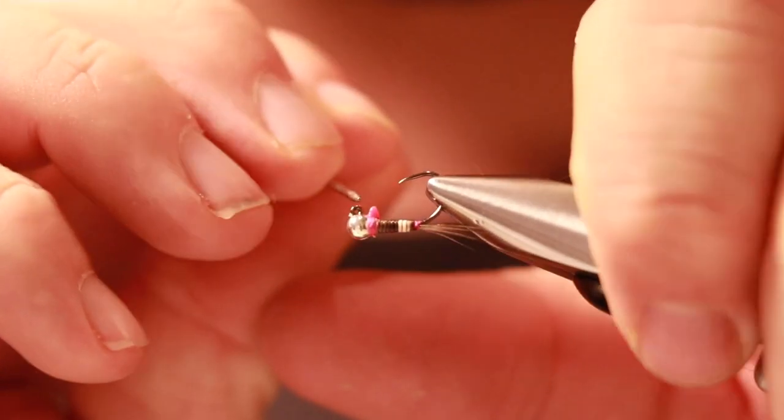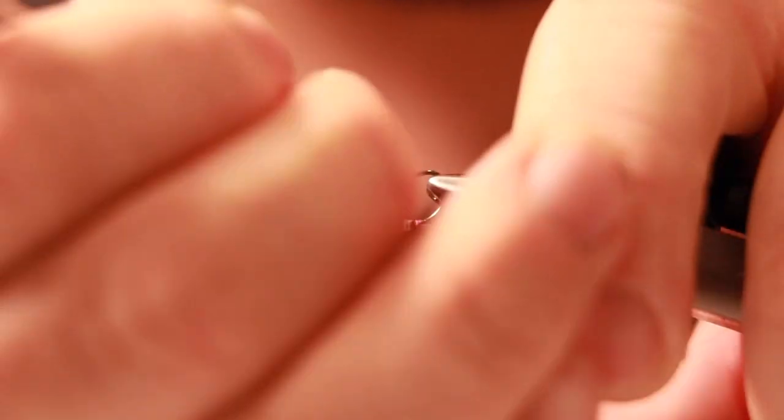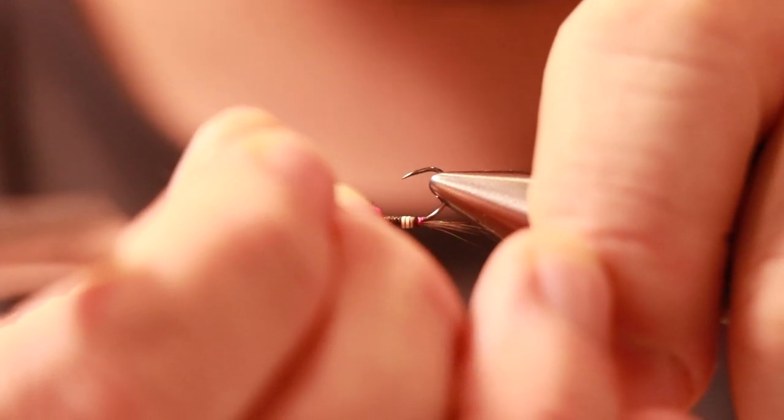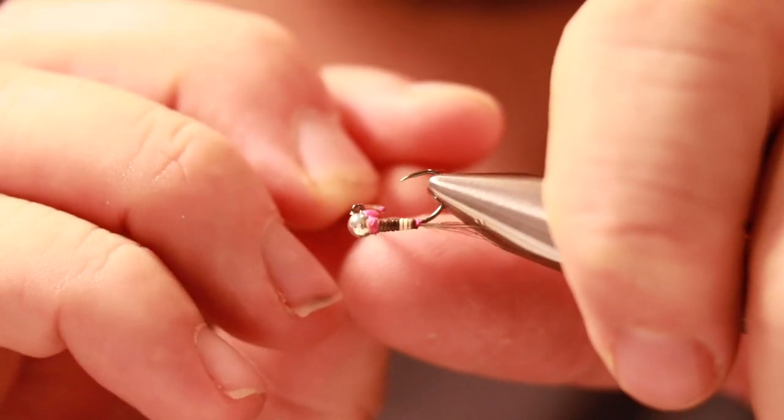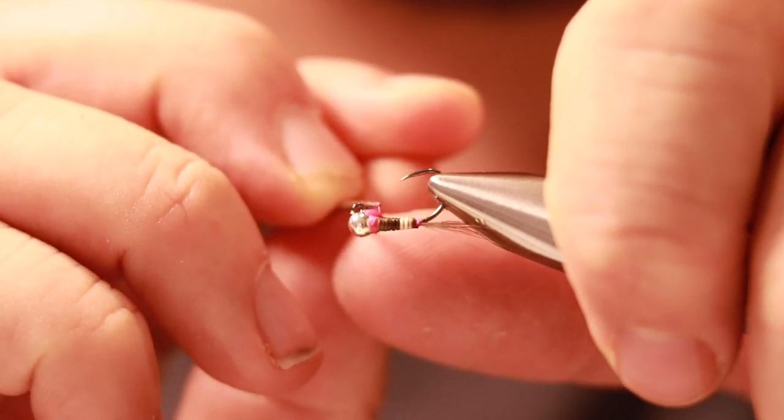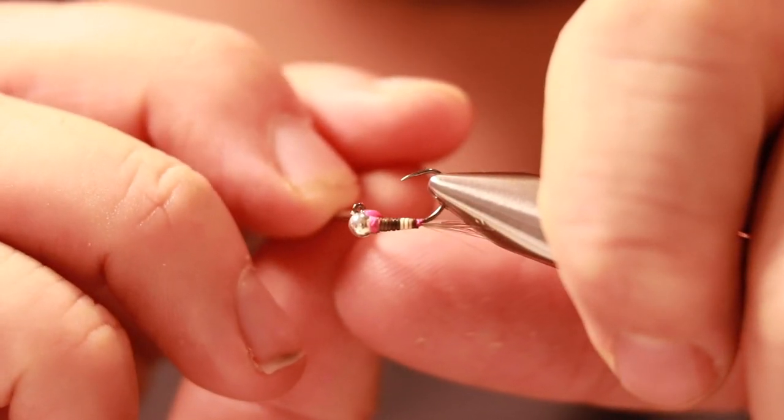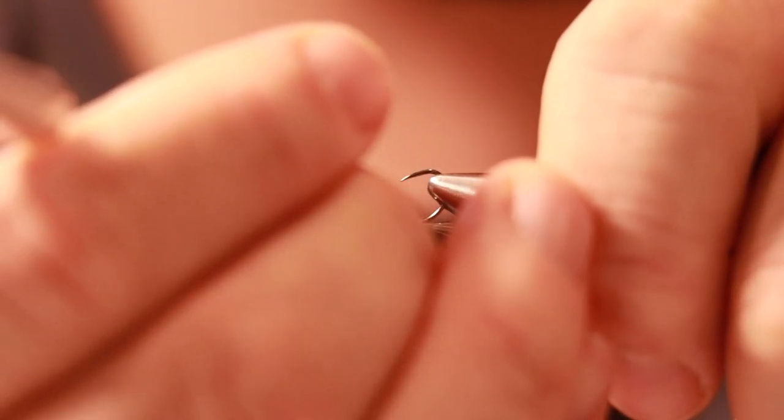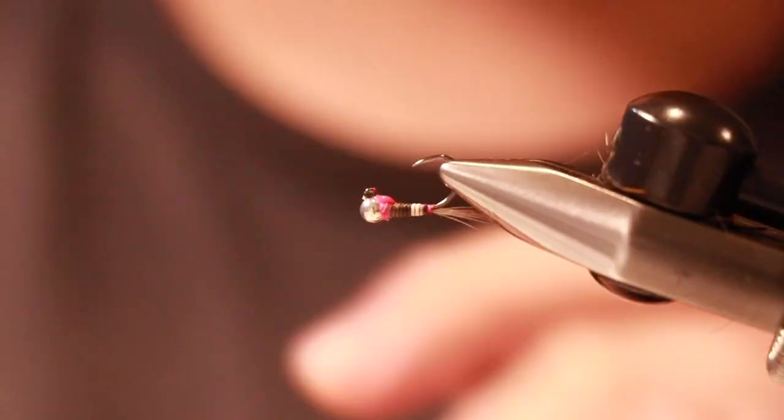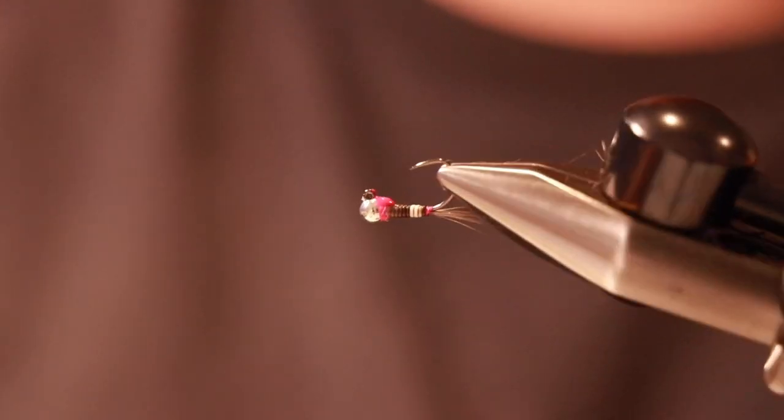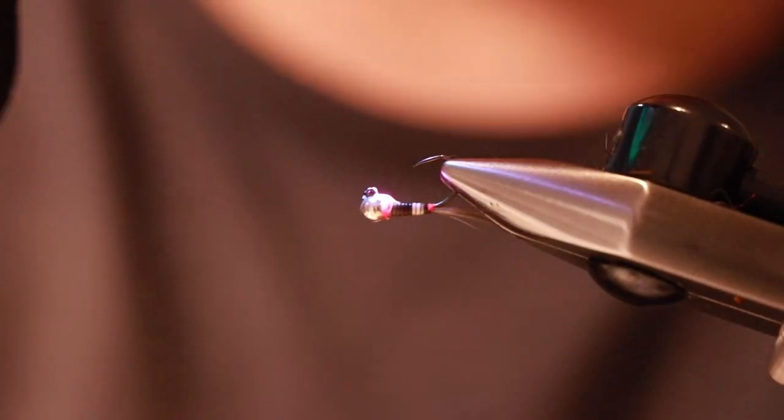And then take a dubbing needle. Just enough to create the shape of a thorax. That should do it. I don't know if you can see that. Then I'll cure that with the torch first.